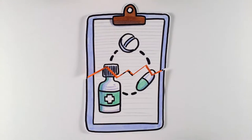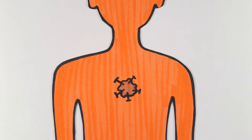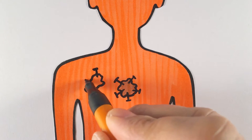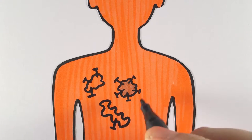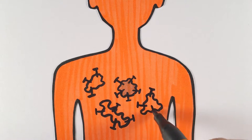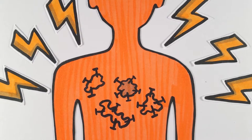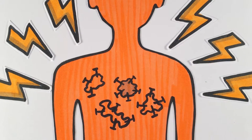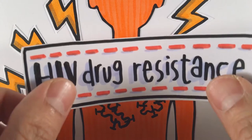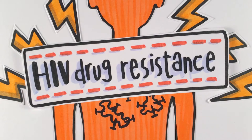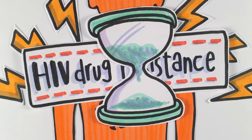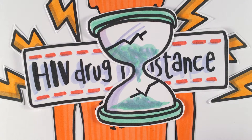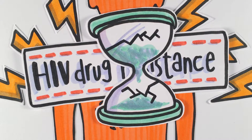However, interruption in treatment allows HIV to replicate and mutate. When mutations occur in the presence of a drug in the body, it can create variants of the virus for which the standard treatment is no longer effective. This phenomenon is referred to as HIV drug resistance, and it can undermine the progress we are currently making to deal with the HIV epidemic if early and effective action is not taken.